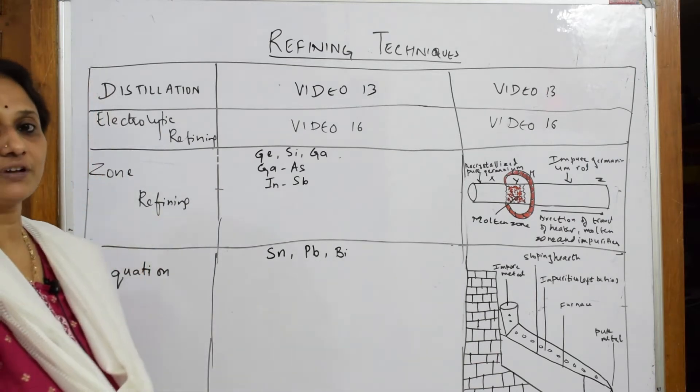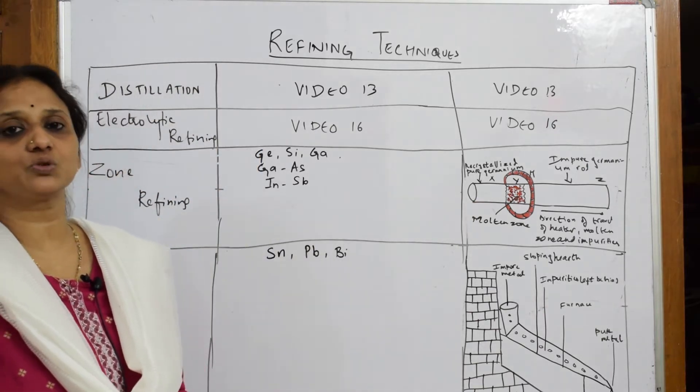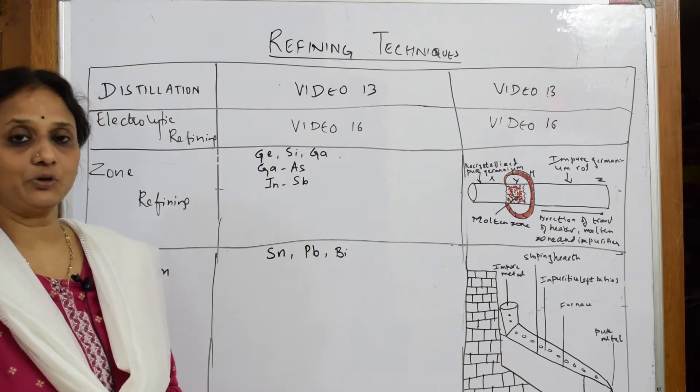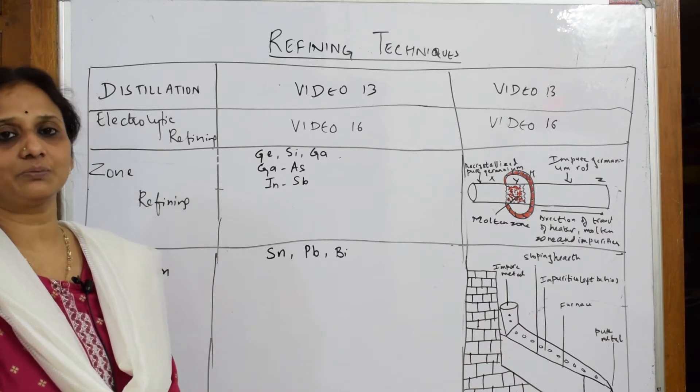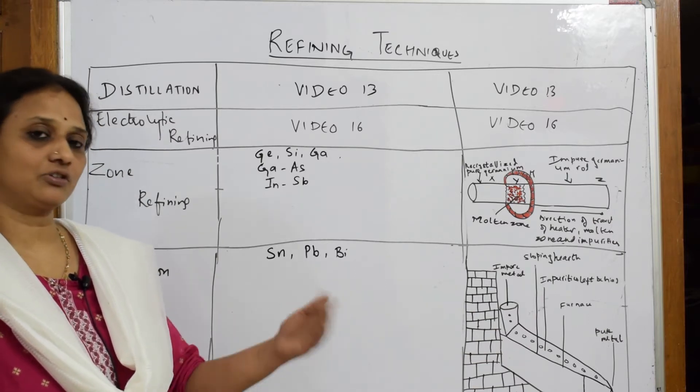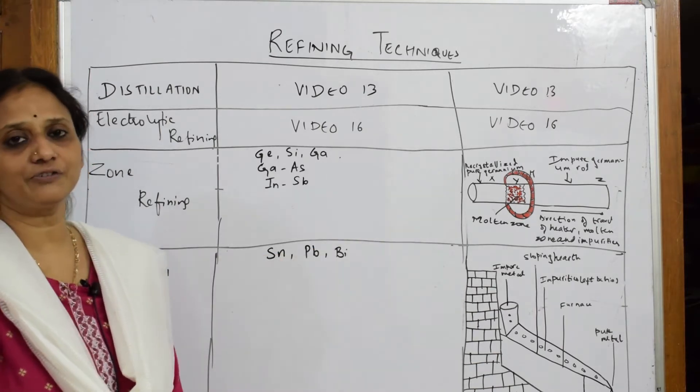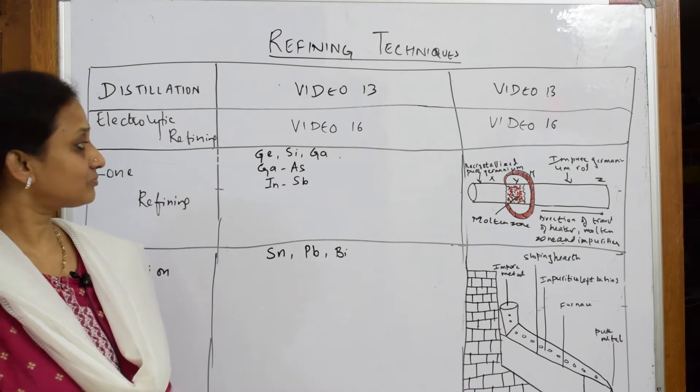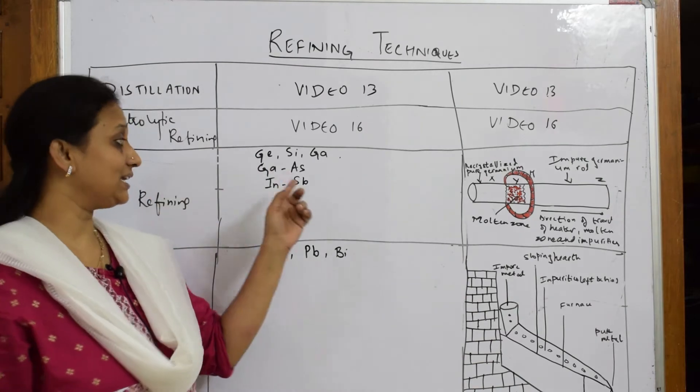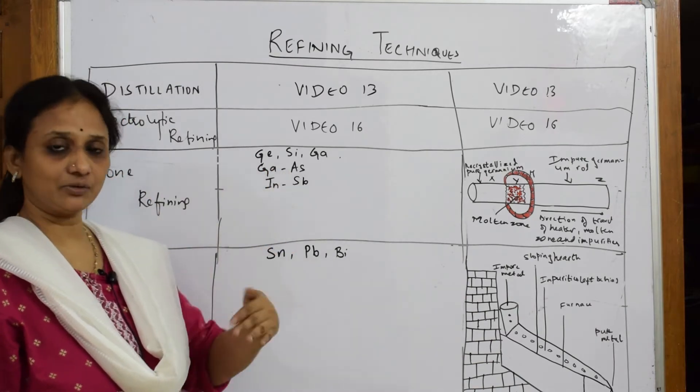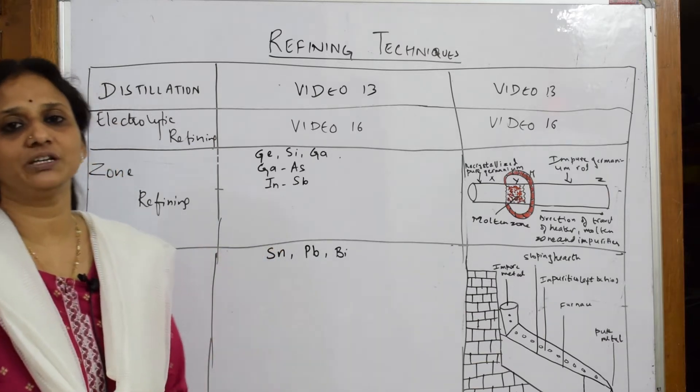Now let us come back to the next concept: zone refining. When I speak about zone refining, the metals which can be extracted through zone refining are germanium, silicon, gallium, germanium arsenide, and indium and antimony combination.